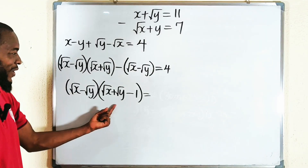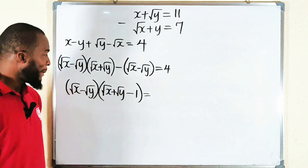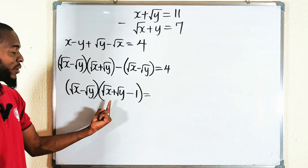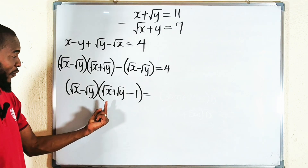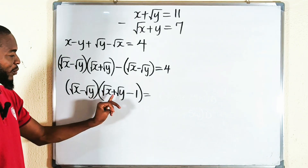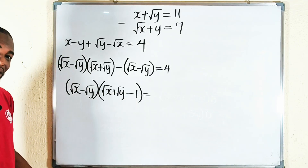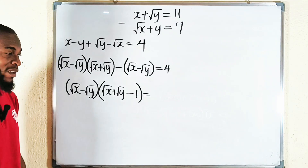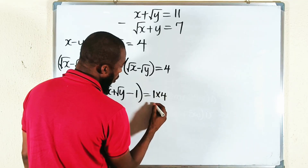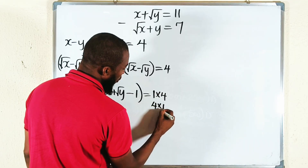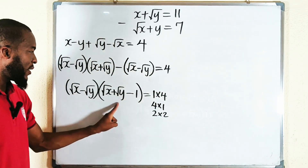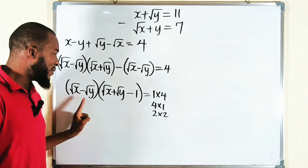We now have two factors whose product is 4. We take only positive factors because x and y must be greater than 0 — for example, if x is 1, square root of 1 plus square root of 1 minus 1 equals 1, which is positive. The factor combinations are: 1 times 4, or 4 times 1, or 2 times 2. So if (√x − √y) is 1 then (√x + √y − 1) is 4; if it's 4 then the other is 1; if it's 2 then the other is 2.